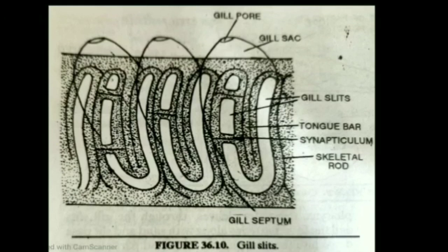The portion of the pharyngeal wall between two gill slits is called the gill septum — plural gill septa. The gill septa are interconnected by horizontal bars called synapticula. Synapticula are short horizontal bars which connect gill septa and tongue bars.